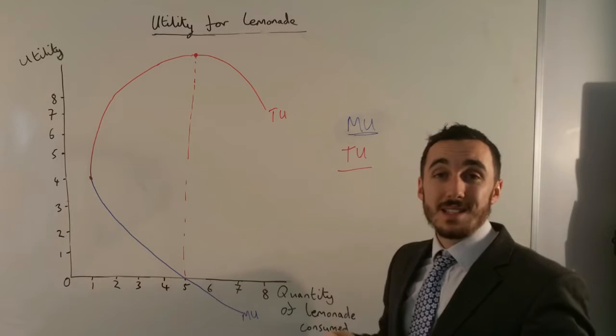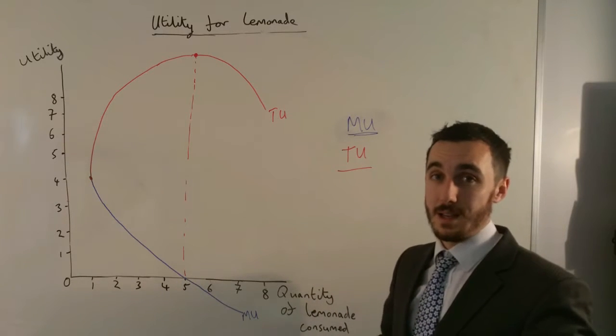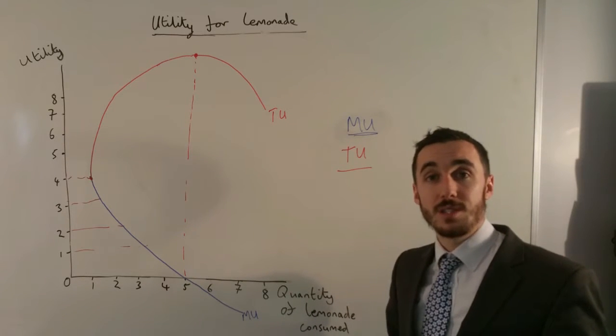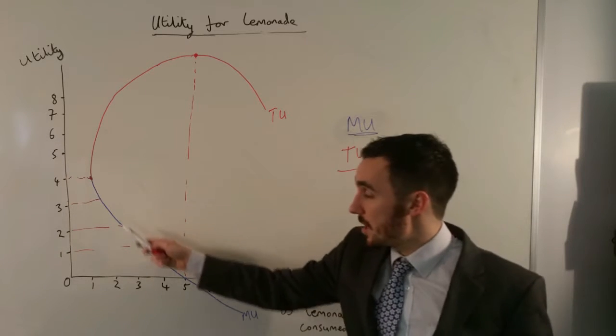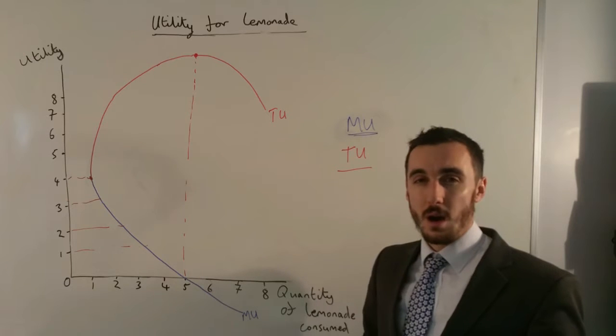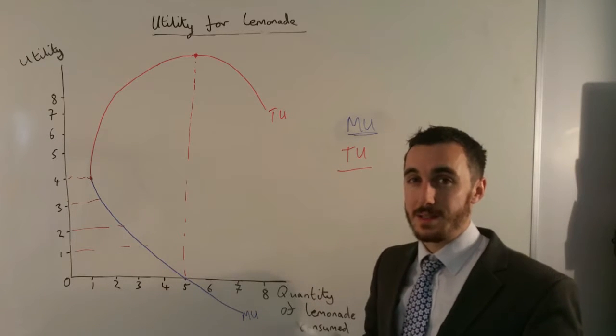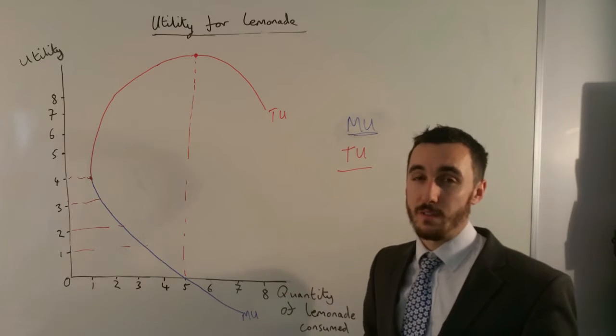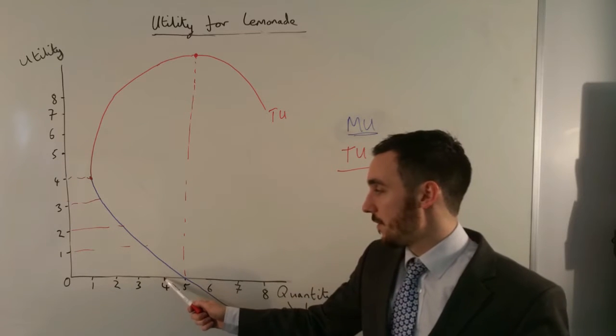So why is this important for economics and for demand theory? If I know my marginal utility is getting less and less each time I consume an extra glass of lemonade, I'm not going to be willing to spend the same amount as I was for my first glass as I am on my fourth glass.